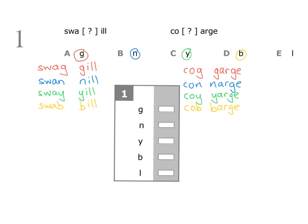We found the answer — it is D, the letter B. All you need to do is mark your answer on the answer sheet with a horizontal line next to the letter B. Don't forget to make sure you're at the correct question number — this is question one.